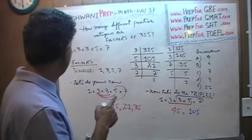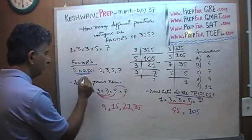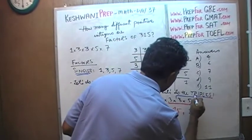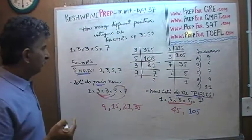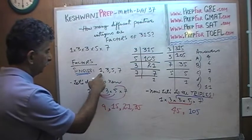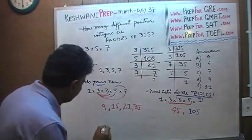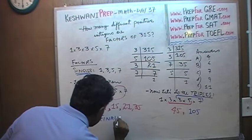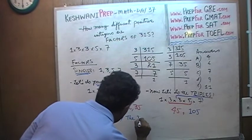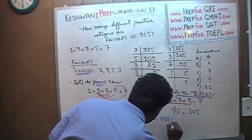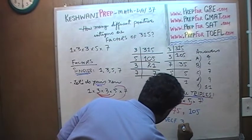So we have our singles, we have our pairs, we have our triples, and finally when you get to the quadruple 1, 2, 3 and 4, that's the number itself. And so finally, the number itself, 315.